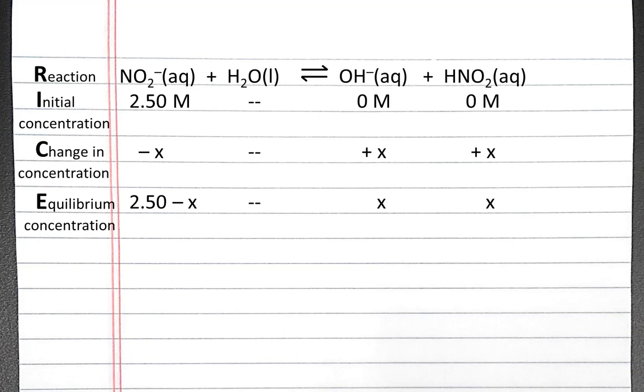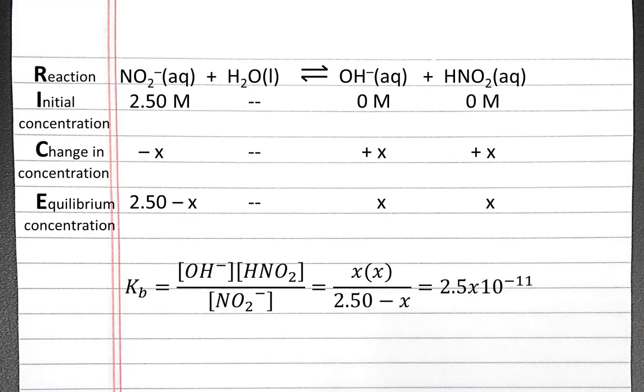We can write the equilibrium constant expression for this reaction, and its Kb equals hydroxide concentration times nitrous acid concentration divided by the nitrite concentration, which at equilibrium is X times X divided by 2.50 minus X, which will equal the 2.5 times 10 to the negative 11th Kb value that we calculated.